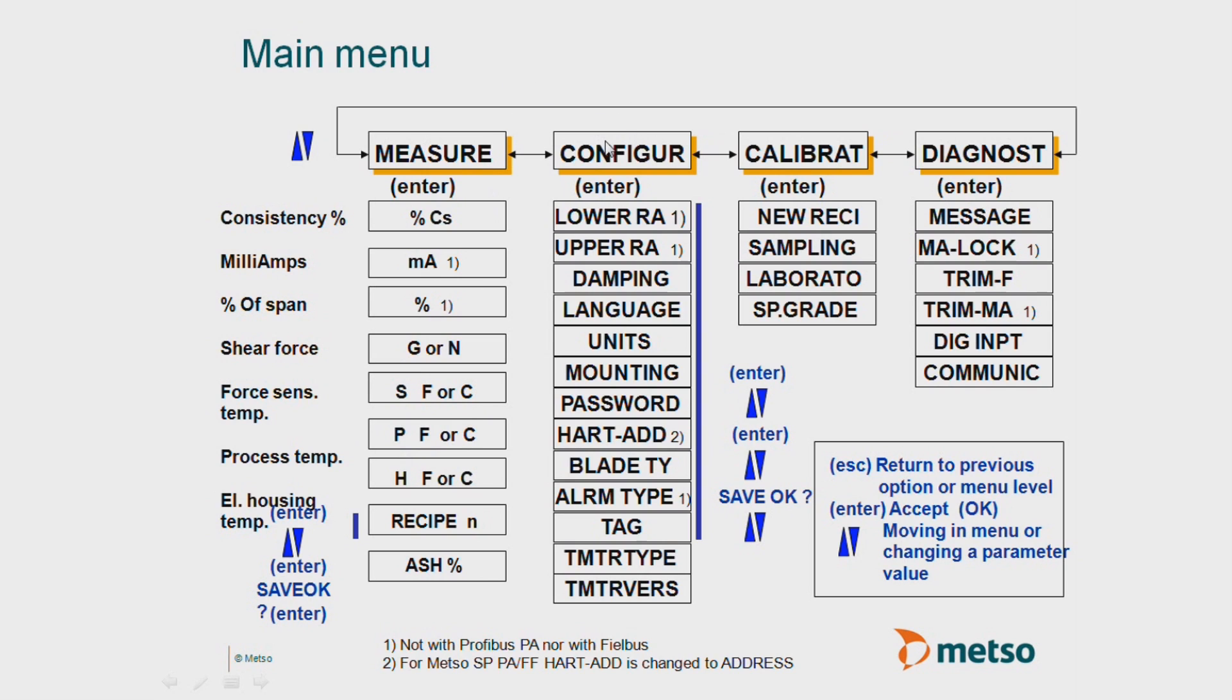Now when we're calibrating configuration and calibration of a SmartPulp, we're going to focus on these two menus. When we go into configuration, what's the lower range? In our case, the lower range is 2% consistency. That's going to match the 4 milliamps. Then we go down to the upper range here, which is going to be 5% consistency in our scenario, and it's going to match 20 milliamps. Then we can skip down to our units. In our case, we're just going to keep it at grams, and temperature is going to be F for Fahrenheit.